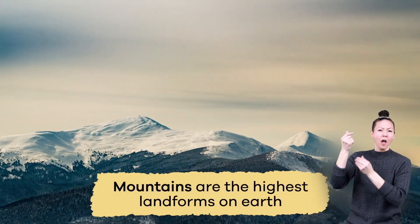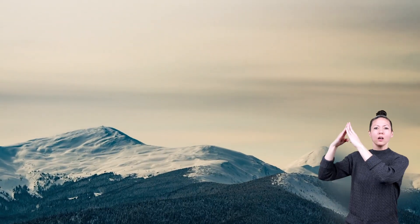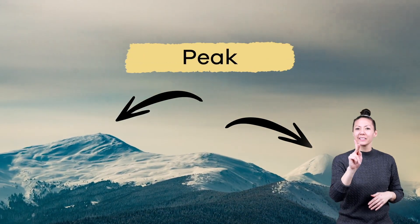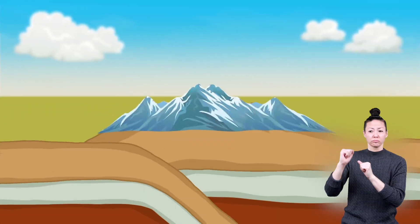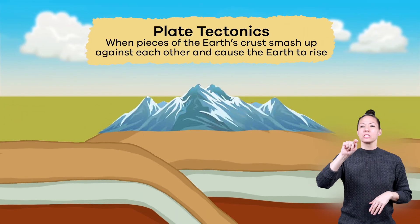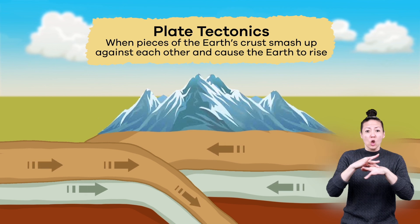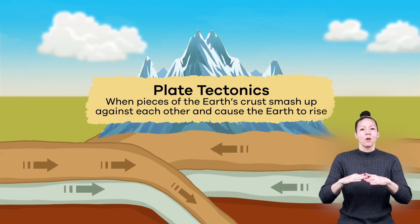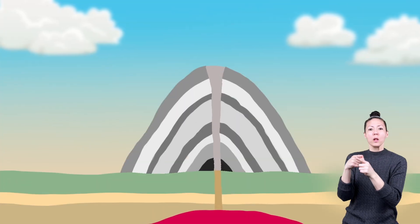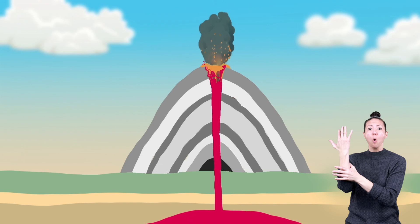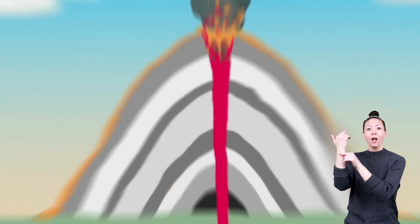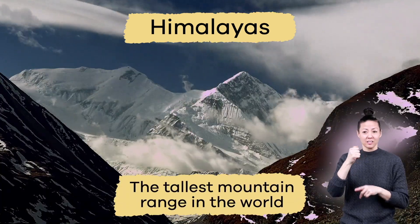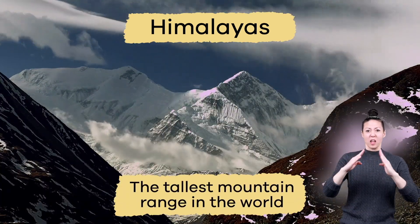Mountains are the highest landforms on Earth. Each mountain has a tip at the very top called the peak. The tallest mountains are formed by plate tectonics, when pieces of the Earth's crust smash up against each other and cause the Earth to rise. They can also be formed when molten rock erupts through the Earth. The Himalayas are a product of plate tectonics and are the tallest mountain range in the world.